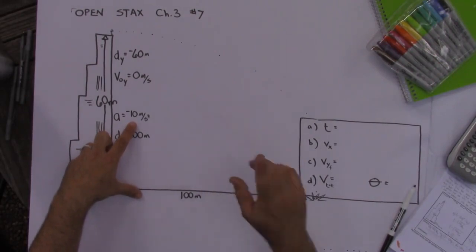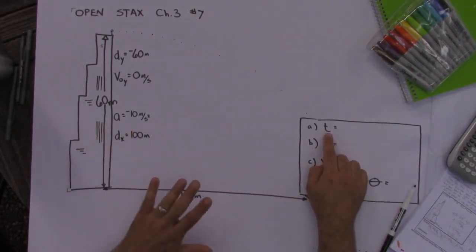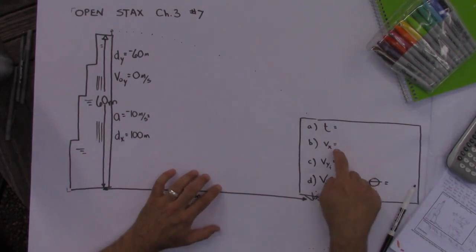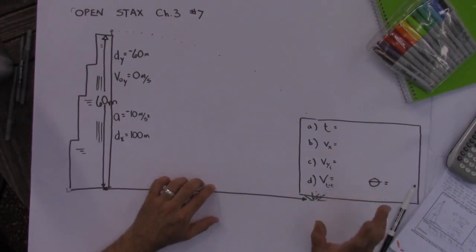Alright, well this problem has four parts. The first thing we need to find is how much time is it in the air. What's the initial velocity in the x direction? What's the final velocity in the y direction? And what's the final velocity velocity? I called it the total velocity.